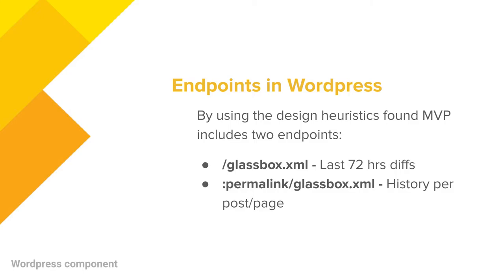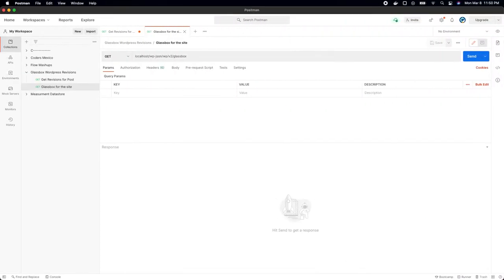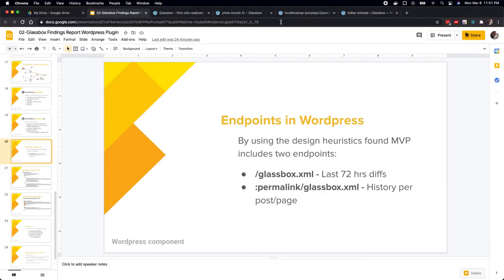In the very beginning we said we wanted to create a Glassbox XML that showed the last 72 hours of changes, but now we're using JSON in the case of WordPress. You could actually go into a permalink and then put slash glassbox — the dot XML part is going to be deprecated — but you will be able to see, just by putting a slash glassbox, the history per post or per page. I want to go into a small demo with you and show you some of the attachments.